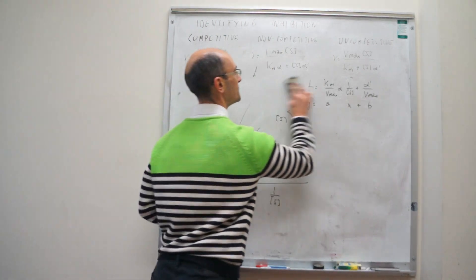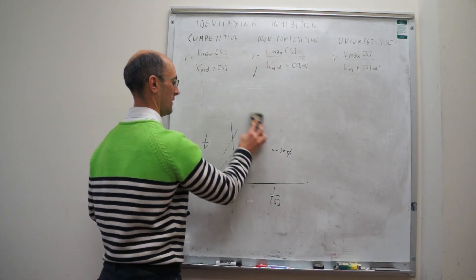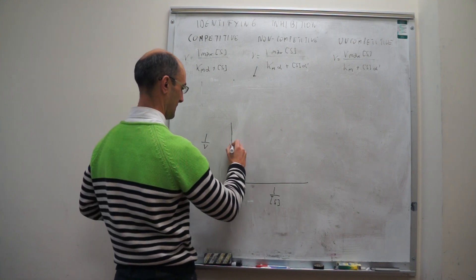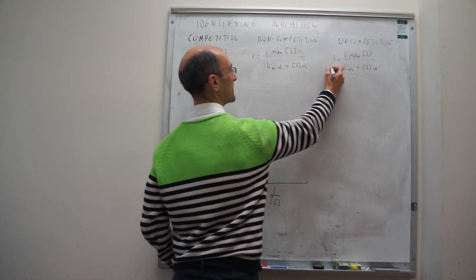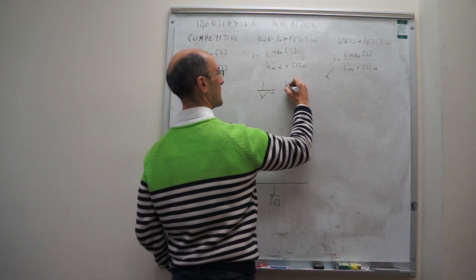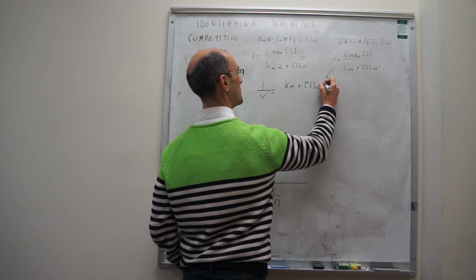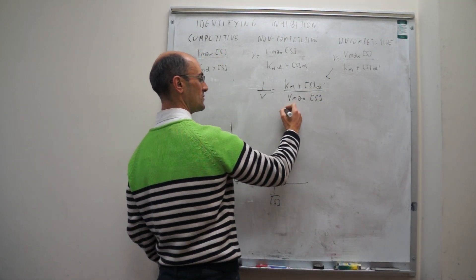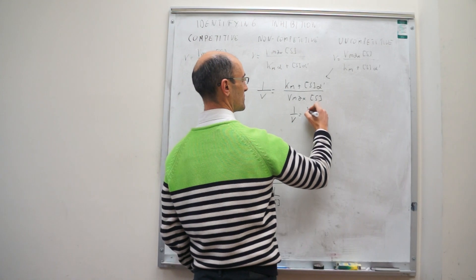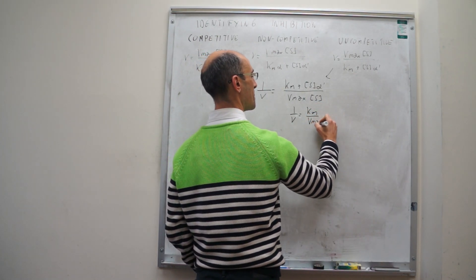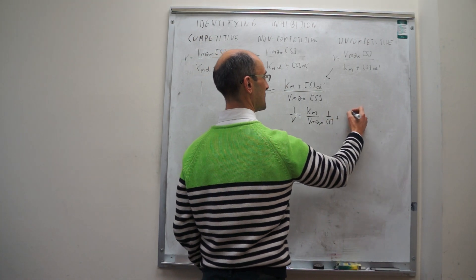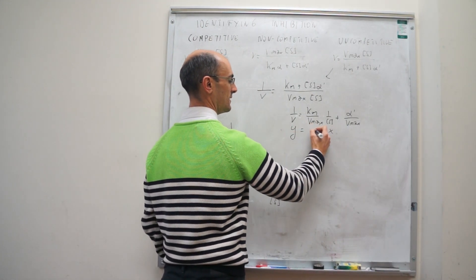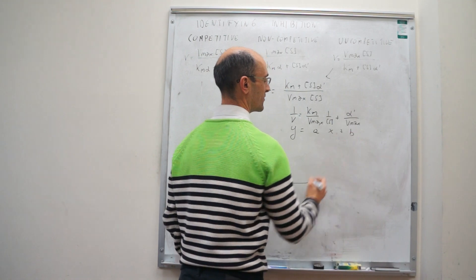For uncompetitive inhibition, taking the double reciprocal gives: 1/V = (K_M / Vmax) × (1/[S]) + alpha prime / Vmax. Separating terms: 1/V = (K_M / Vmax) × (1/[S]) + alpha prime / Vmax. The only thing that changes here is the y-intercept — the slope doesn't change.